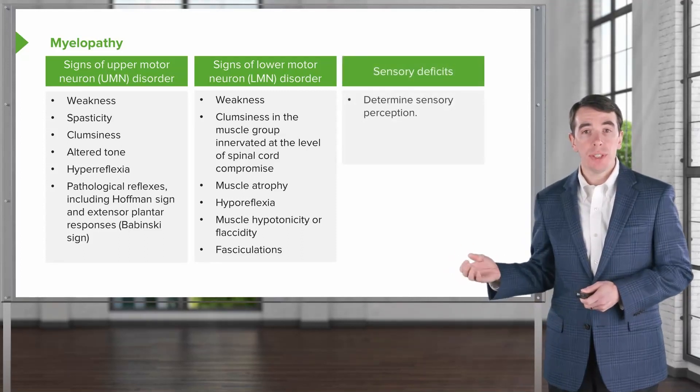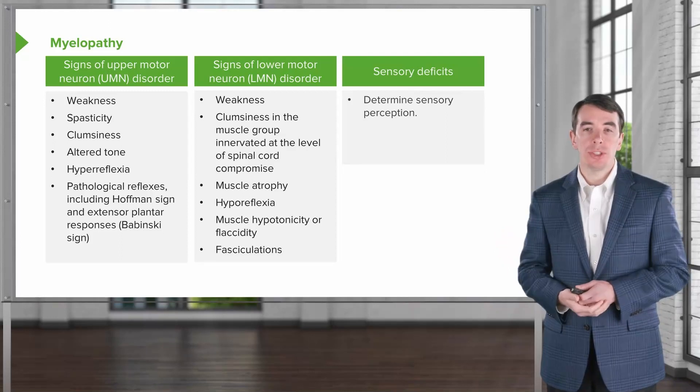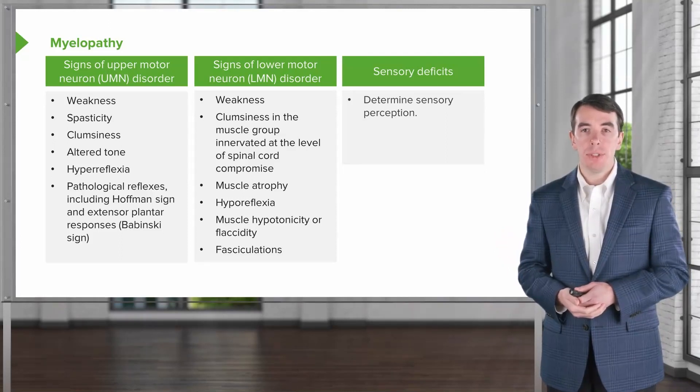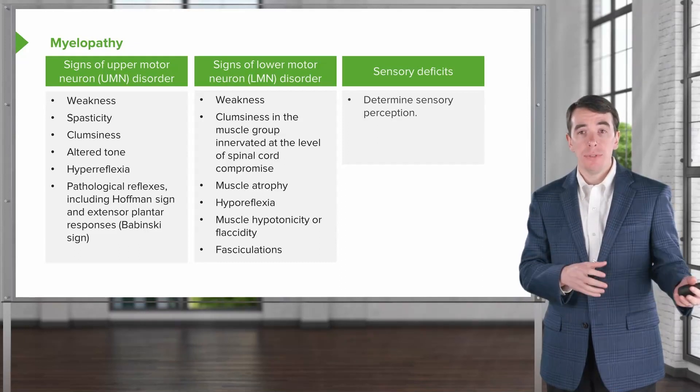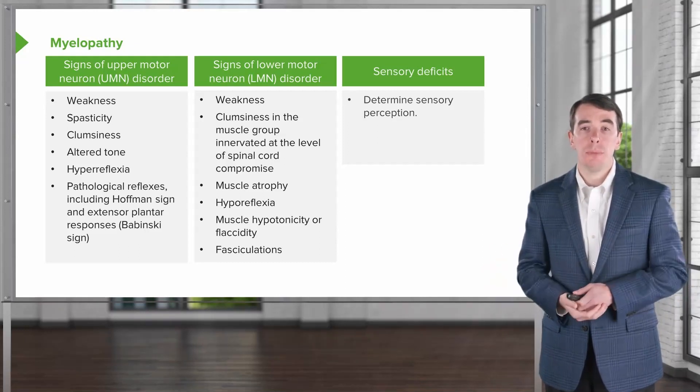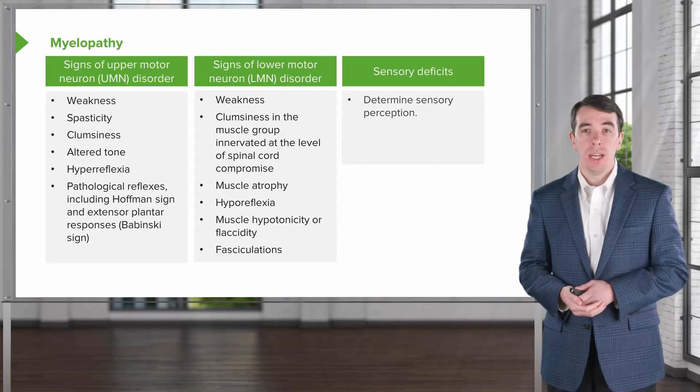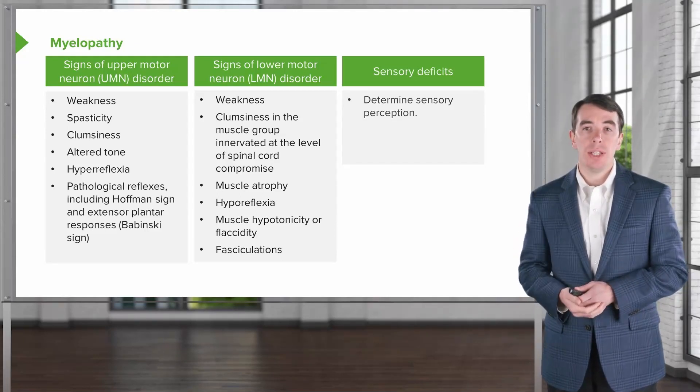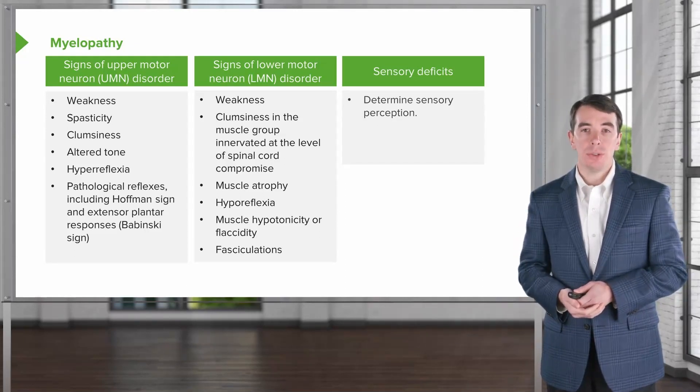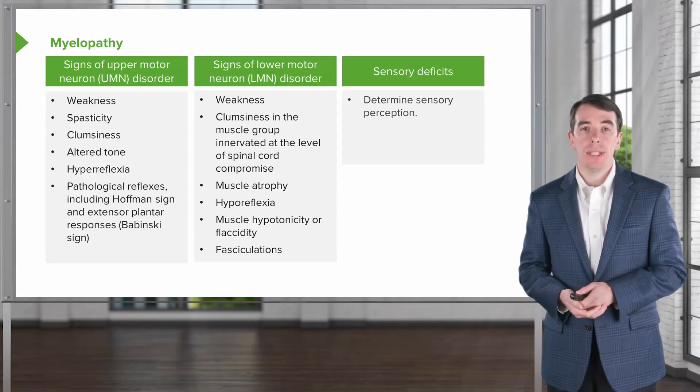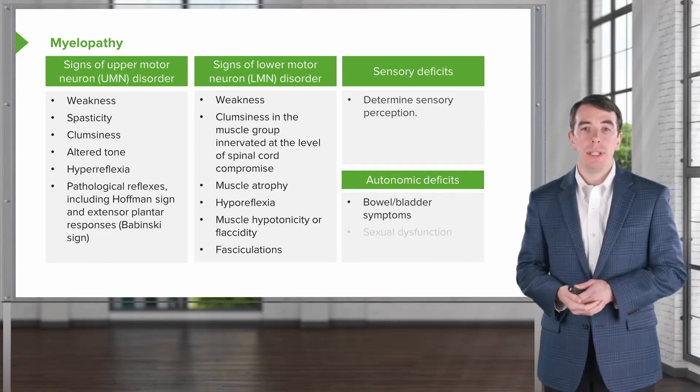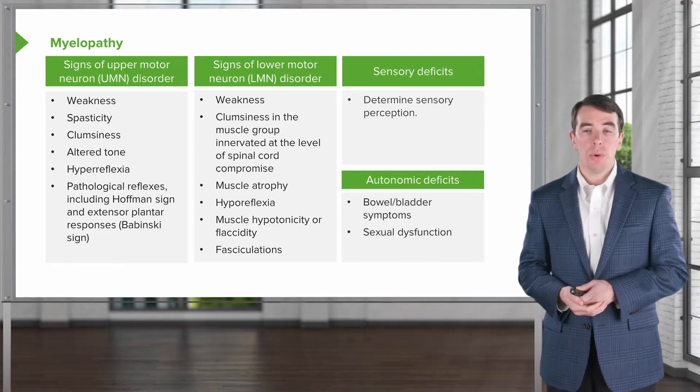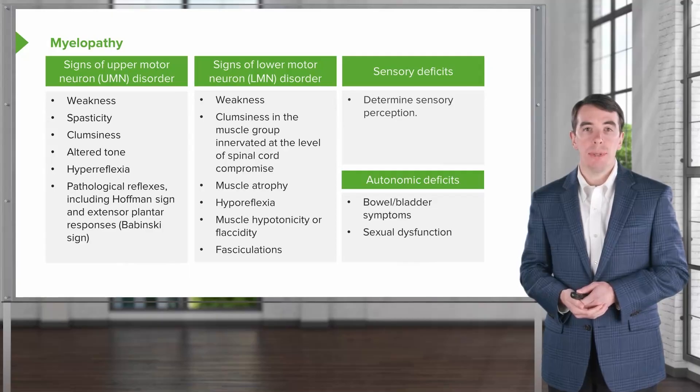We can see sensory deficits, and importantly, we want to look for a sensory level. A sensory level is essentially diagnostic of a spinal cord process. Sometimes it can be very difficult to differentiate a sensory level from other sensory findings, and it takes meticulous focus to the neurologic exam in these patients to discern that level, which is critically important when evaluating these patients. And then lastly, bowel and bladder symptoms are not uncommon, and sexual dysfunction, which requires a careful history and detailed examination.